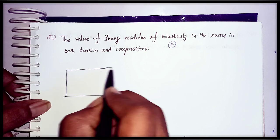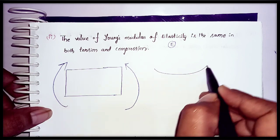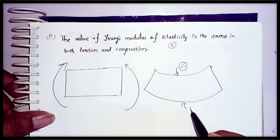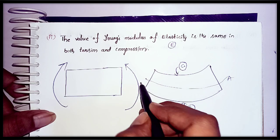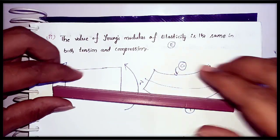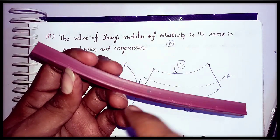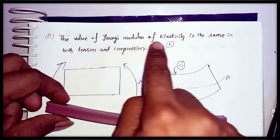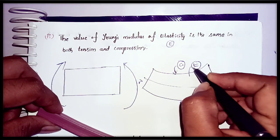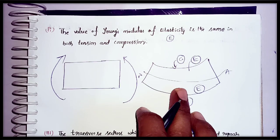The second assumption is that the value of Young's modulus of elasticity E is the same in both tension and compression. If we apply bending moments on both sides of a beam, the beam will deflect — the top zone becomes a compression zone and the bottom zone becomes the tensile zone. The Young's modulus of elasticity is the same in both the tension and compression zones.